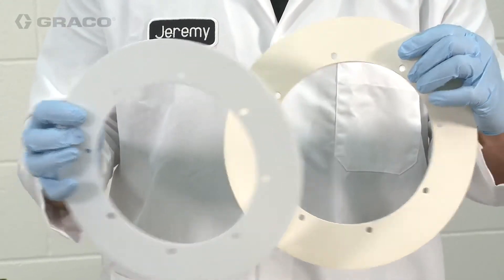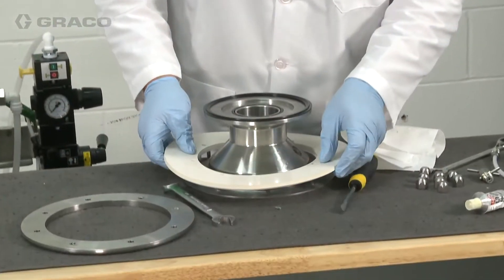Replace the backer, then the main wiper, followed by the retainer plate with its curved side down.